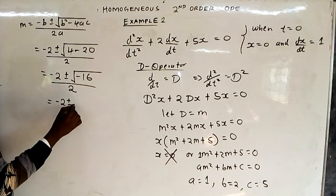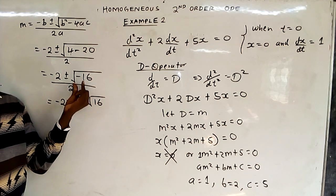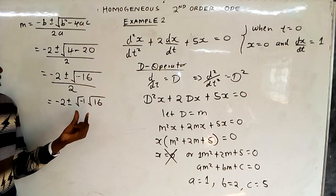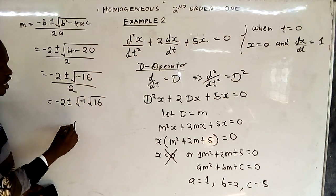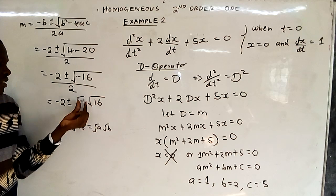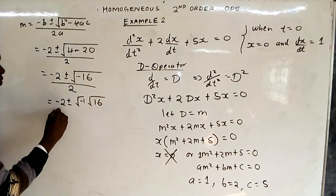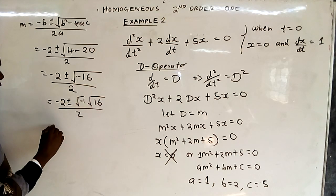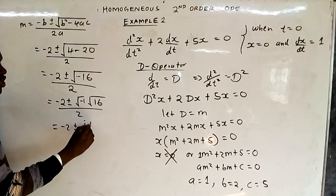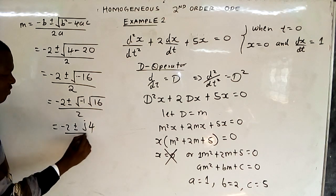We get negative 2 plus or minus square root of negative 1 times square root of 16, because negative 16 is a product of negative 1 and 16. The square root of ab equals square root of a times square root of b. So our a is negative 1 and b is 16. Square root of negative 1 is j, and square root of 16 is 4. So we have negative 2 plus or minus 4j, all over 2.